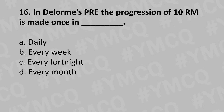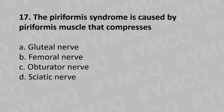Moving to our 16th question: in DeLorme's PRA, the progression of 10 RM is made once in: Option A: Daily, Option B: Every week, Option C: Every fortnight, Option D: Every month. And the answer is Option B: Every week.